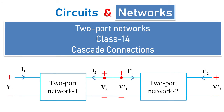Welcome to another session of circuits and networks. In today's two-port networks class 14, we will see about cascade connections. When the output port of network 1 is connected as input to network 2, then this type of connection is regarded as a cascade connection.